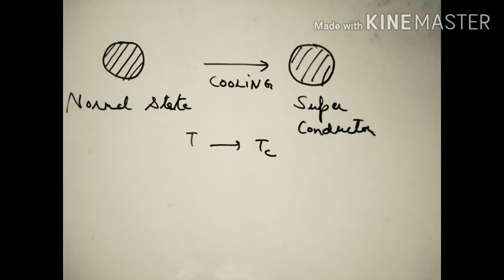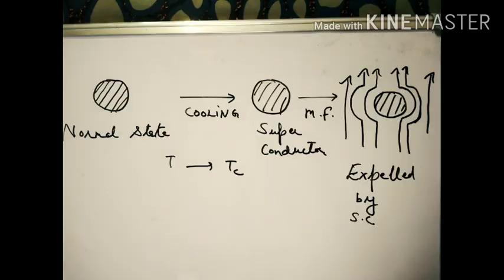At the critical temperature, the normal conductor changes into a superconductor. Then we apply an external magnetic field to the superconductor. The magnetic flux lines are expelled by the superconductor — they do not pass through it but are resisted and expelled. This is the first observation.